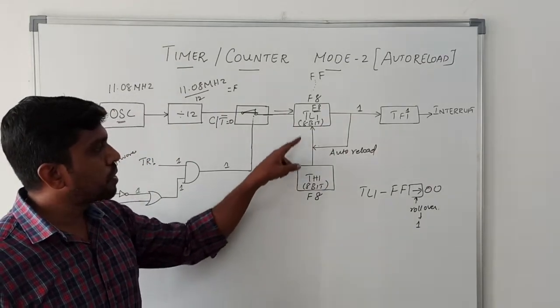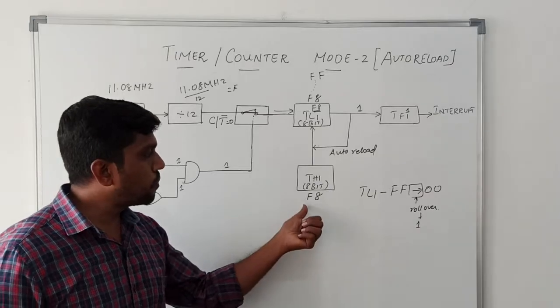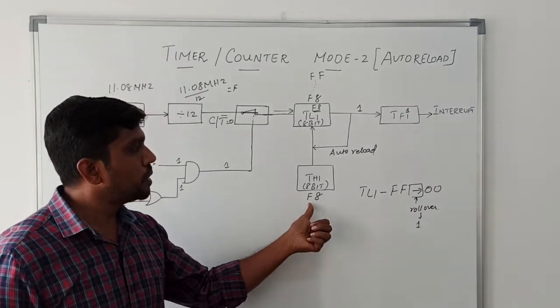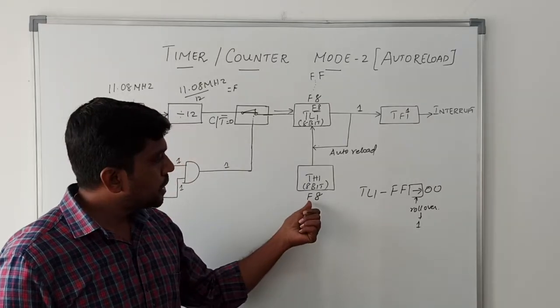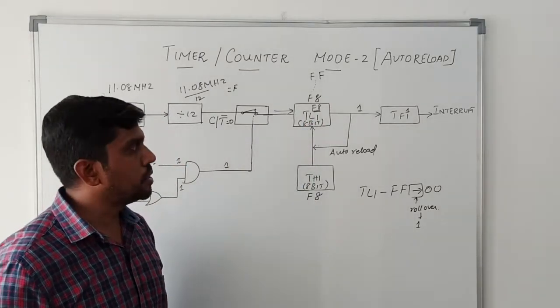This type of operation is called auto reload mode. Once you fix the initial timer value, after completing the rollover, the initial value TH1 goes to TL1 register.